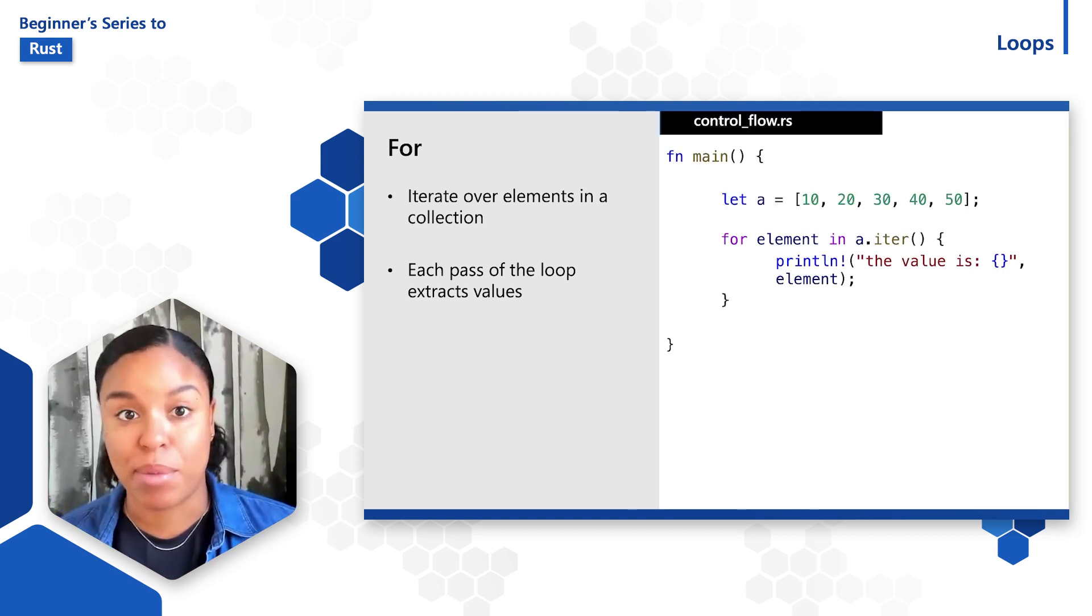In this code sample, inside of the main function, we define an array called a with five elements. The code iterates through each element in the array and binds it to the element variable. Then the value is printed.